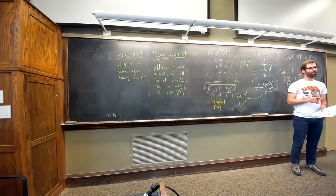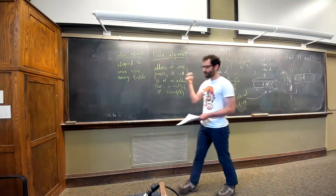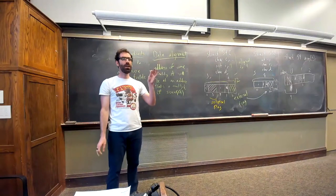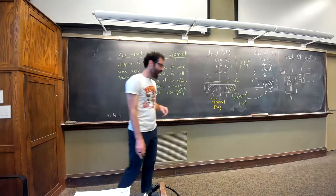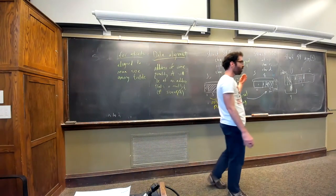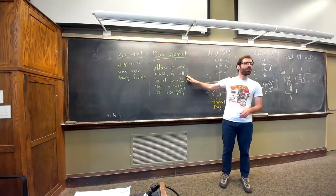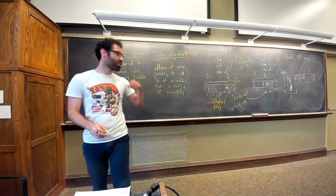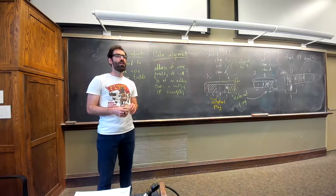A student asked whether C is the only language that deals with this, or if Java does too. Any code running on an x86 system has to deal with data alignment. Java will also need to do something to align the fields of an object, because we still want to be able to read and write them efficiently.